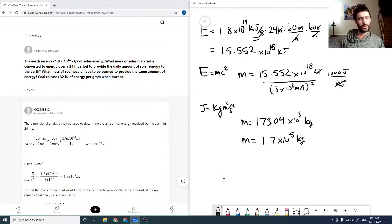Okay, so then the second part of the question says, what mass of coal would have to be burned to provide the same amount? Coal releases 32 kilojoules per gram. So for coal, we have 32 kilojoules per gram.